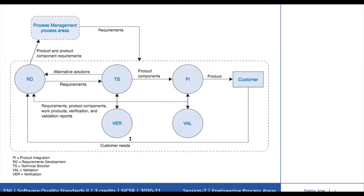The Verification Process Area ensures that Selected Work Products meet the Specified Requirements. It selects Work Products and Verification Methods that will be used to verify work products against specified requirements. Verification is generally an incremental process, starting with Product Component Verification and usually concluding with Verification of Fully Assembled Products. Verification also addresses Peer Reviews, which are a proven method for removing defects at an early stage and provide valuable insight into the work products and product components being developed and maintained. The Verification Process Area incrementally validates the product against the customer's needs.